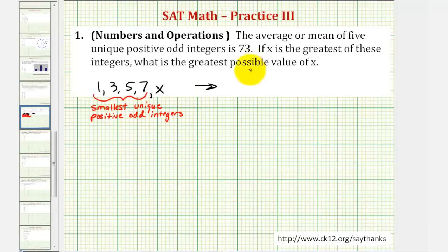If we find the sum of these, one plus three plus five plus seven plus x and divide by five, since there are five numbers, this must equal 73.